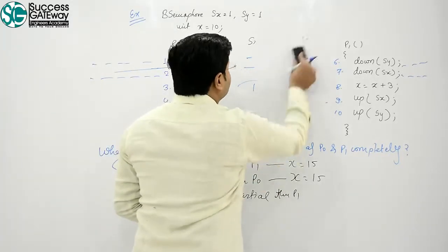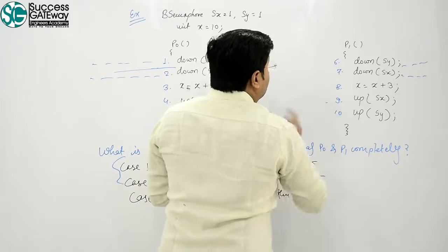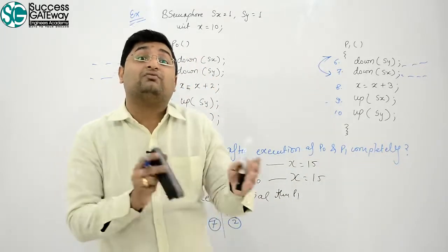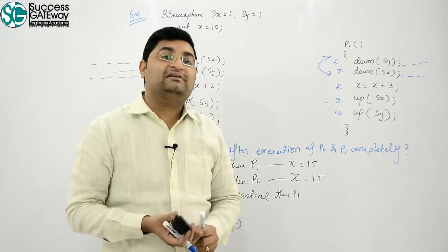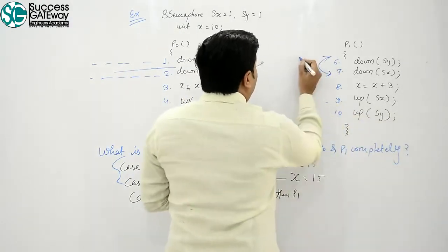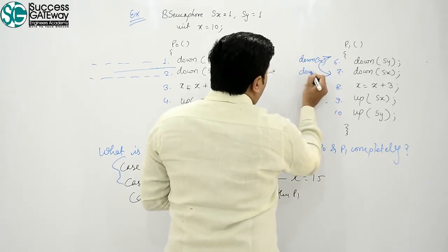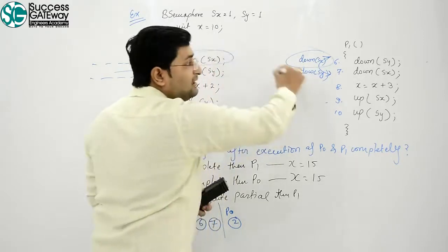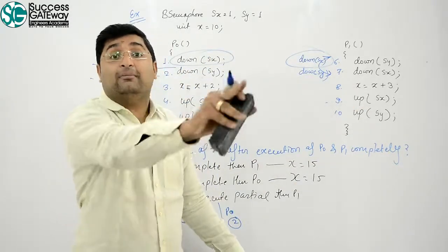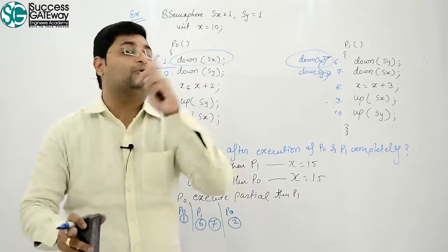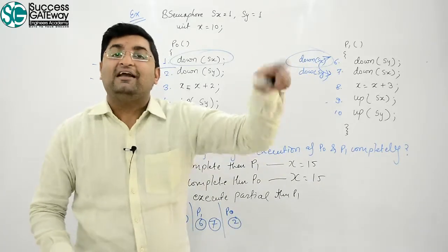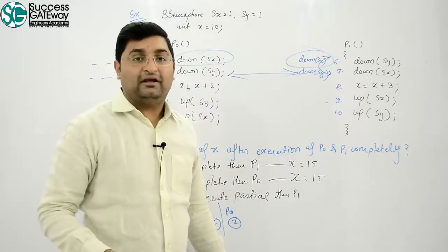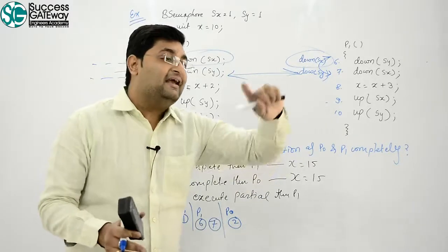Now if I swap statements 6 and 7. If I swap 6,7 statements, I mean down Sx and down Sy. So now, either this pair will be successful or this pair will be successful in P0 or P1. One of these pairs will be successful, but both pairs can't be successful simultaneously.